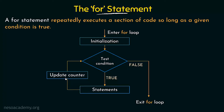Within the for statement itself, we are going to update the counter — that is usually the variable that was initialized. The same variable will be updated, meaning it will be either incremented or decremented, and then the condition will be checked again. If it is true, it will be executed again, the counter will be updated, and the condition checked again. After updating the counter, if the test condition is false, then we exit or come out of the for loop.